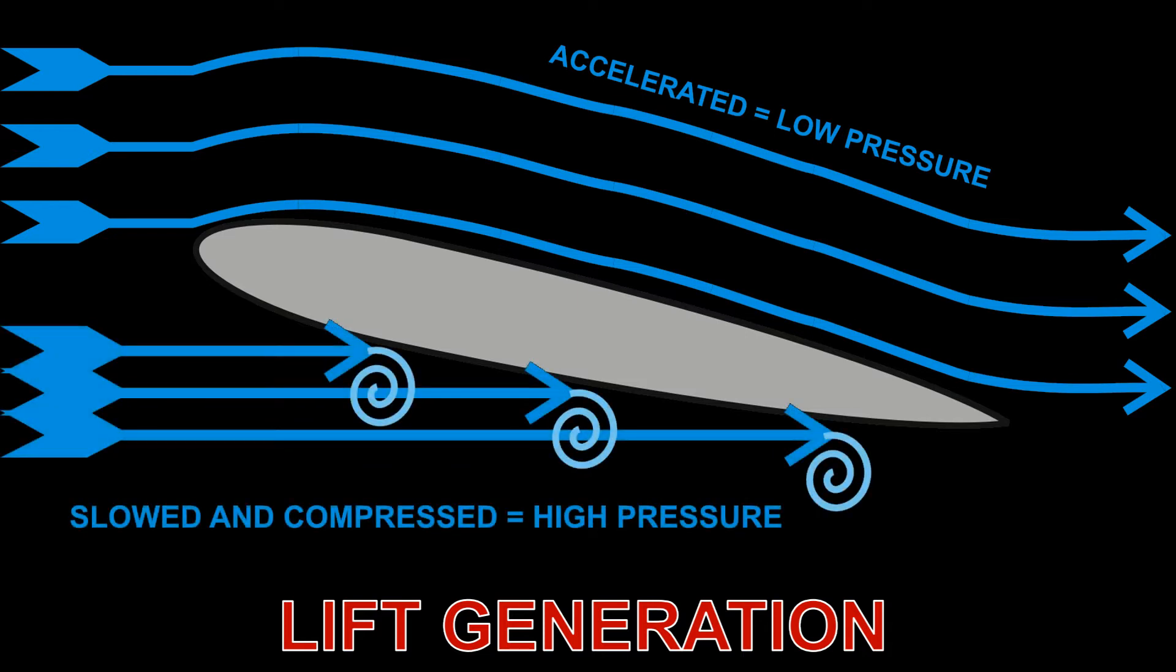Conversely, the lower part of the wing is hitting the airflow square on, similar to sticking your hand out of a car window at high speed, palm facing the airflow. This slows and compresses the air, leading to high pressure. The bottom of the wing is pushed up. Therefore, an overall lift force is created.